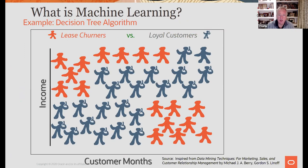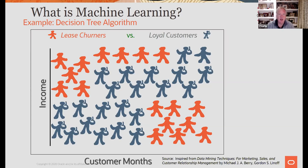I use this graphic from Michael Berry and Gordon Linoff, who wrote some of the best books on machine learning. Back when we were at Thinking Machines, they spun off and became machine learning consultants. They use an example similar to this — they had animals, different types of dinosaurs; I changed it to people who have a lease, people who walk away from it, and people who keep their lease.